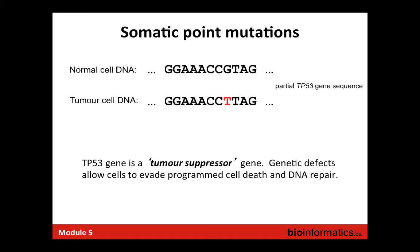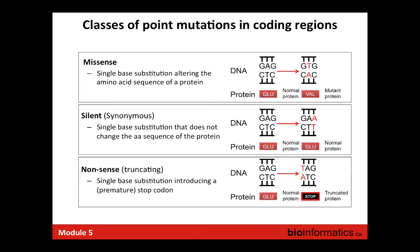Unlike copy number variations which encompass thousands of base pairs, today we're talking about tiny things in the genome that matter: point mutations. Here's an example from the p53 gene—this red base indicates a change from the reference sequence found only in the tumor cell DNA, not in normal cell DNA. That is a somatic event. There are also germline events—a p53 germline mutation would cause Li-Fraumeni syndrome, predisposing a person to multiple types of tumors.